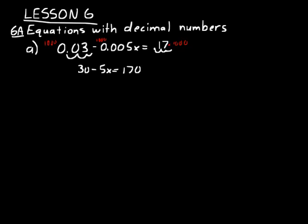Okay, then we can subtract 30 from both sides and we'll end up with minus 5x is equal to 170 minus 30. And so that would just be 140 minus 5x equals 140. And so x is equal to 140 over negative 5.